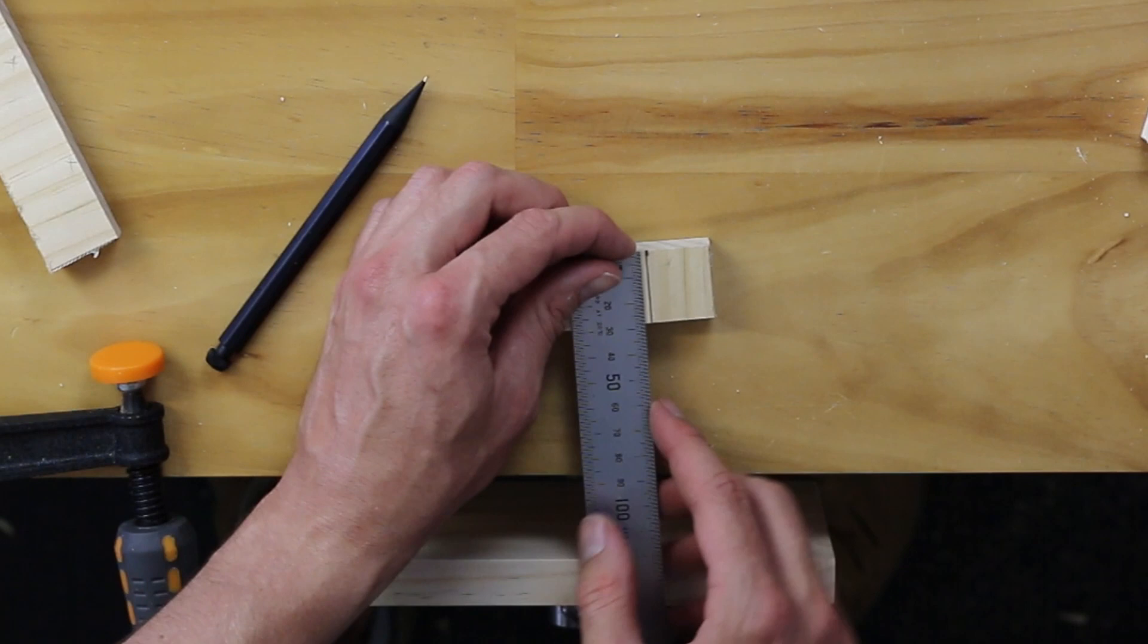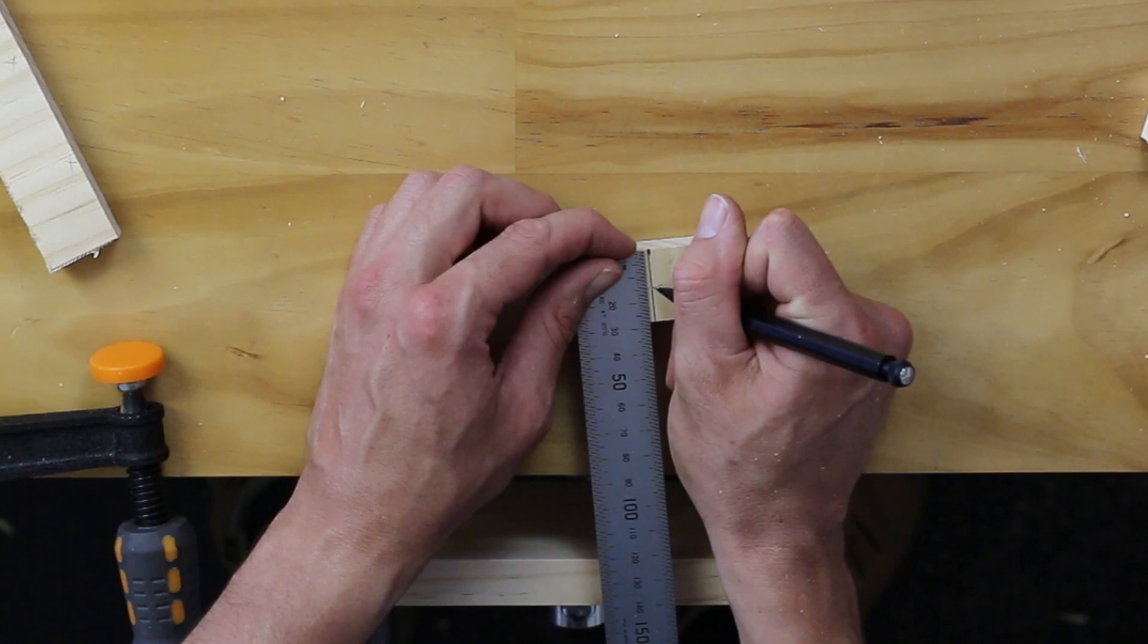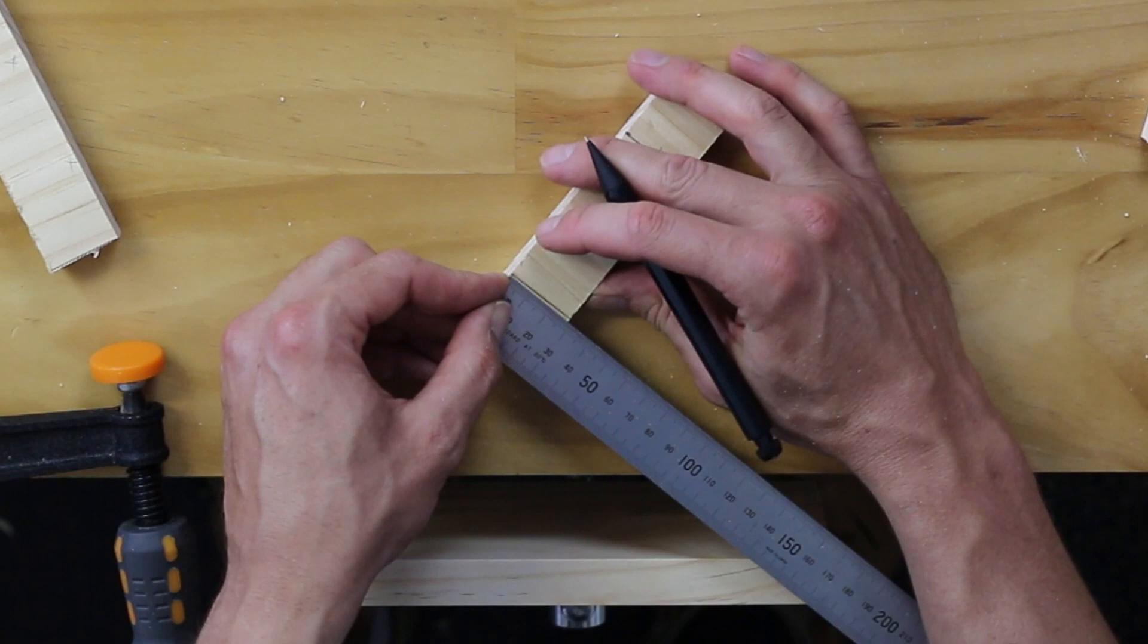Measure the width of your piece and then mark at the halfway point. As you'll see, I'm marking a cross, which allows for precision when drilling. Once you've done it to one end, do it to the rest of the ends on both pieces.